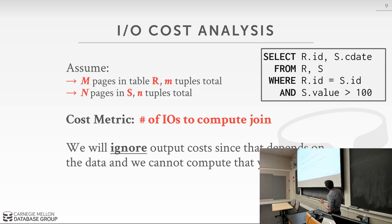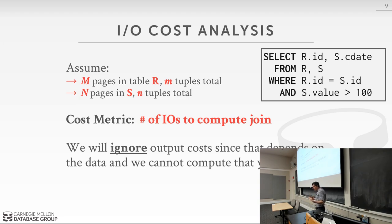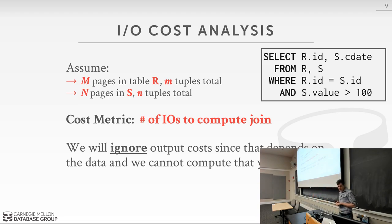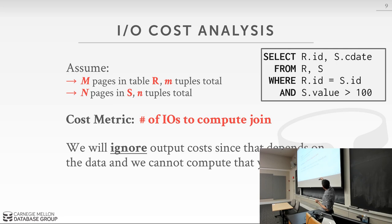When talking about different join algorithms, the method we'll use to determine whether one algorithm is better than another is strictly based on disk I/O. Going to disk is always the most expensive thing. We define our cost formulas for join algorithms in terms of the number of pages and tuples in the two tables: M pages in table R with lowercase m tuples, and N pages in S with lowercase n tuples.